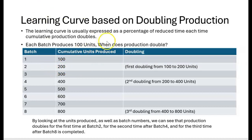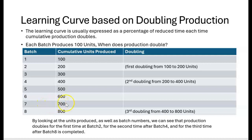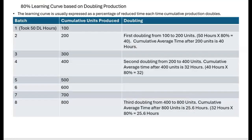The first batch produces 100 units, the second batch produces another 100 units — cumulative units are now 200. That's the first doubling, from 100 to 200 units. The third and fourth batches each add 100 units, bringing us to 400 cumulative units — that's our second doubling from 200 to 400, which happens at batch four. Production doubles for the first time at batch two, the second time at batch four, and the third time at batch eight, when cumulative units reach 800.